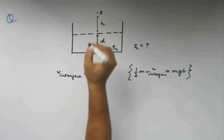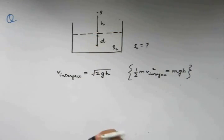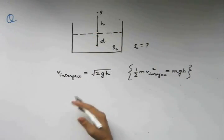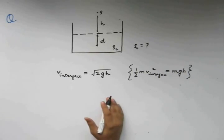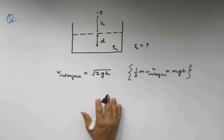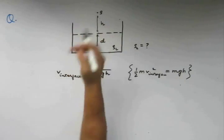Now, when the body hits the surface, it is going to experience some retardation. The retardation will be due to the upthrust of this liquid on this body.